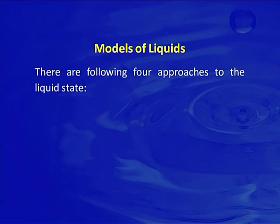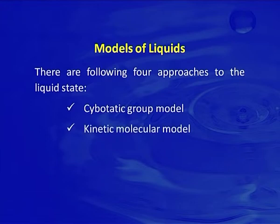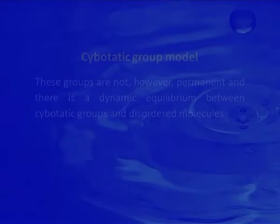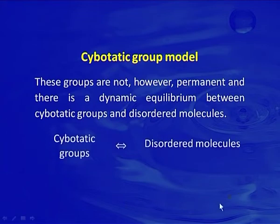There are four approaches to the liquid state — models of liquids. First, the cybotactic group model. Second, kinetic molecular models. Third, liquid as a modified solid. Fourth, the random packing model. According to the cybotactic group model, suggested by Stewart, a large number of well-ordered groups called cybotactic groups, each containing a few hundred molecules, are embedded in a mass of disordered molecules. These groups are not permanent, and there is a dynamic equilibrium between cybotactic groups and disordered molecules.